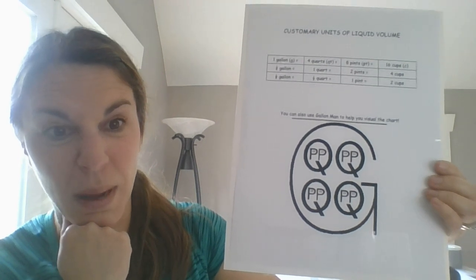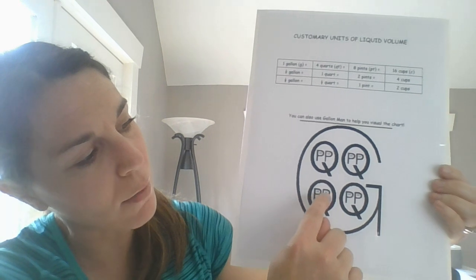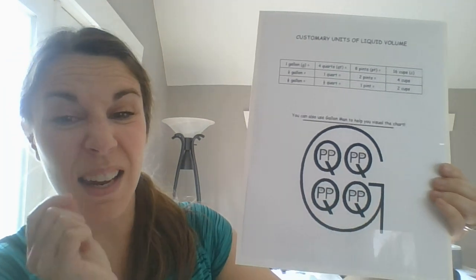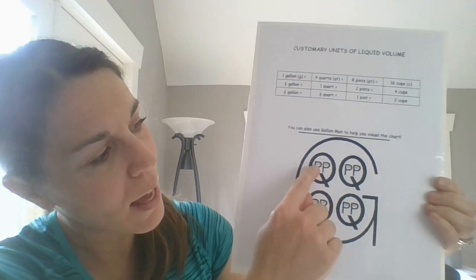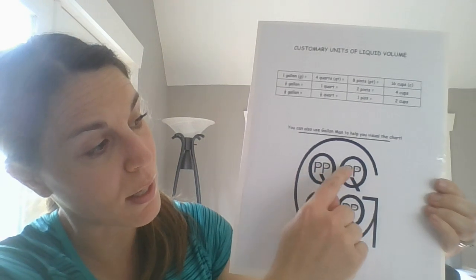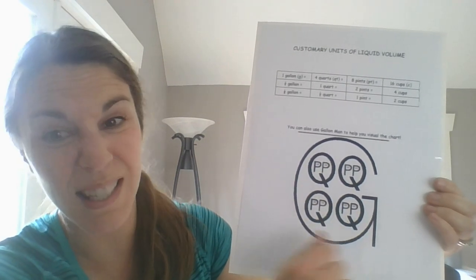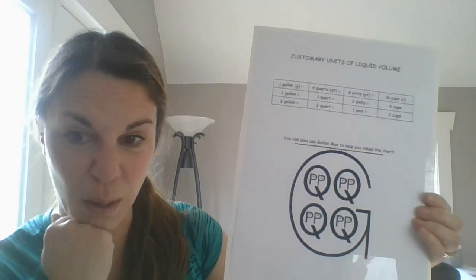And if I looked at that, how many pints are in a gallon? One, two, three, four, five, six, seven, eight. And then in every single one of those pints, it's really tiny to see, there are two little Cs for cups. So if I counted those: two, four, six, eight, 10, 12, 14, 16 cups. So this visual matches the chart up there.